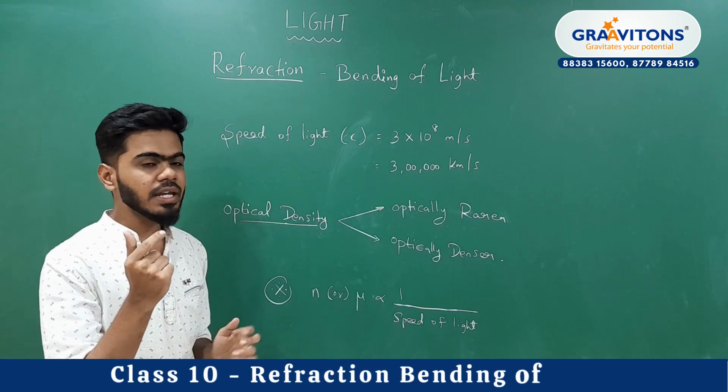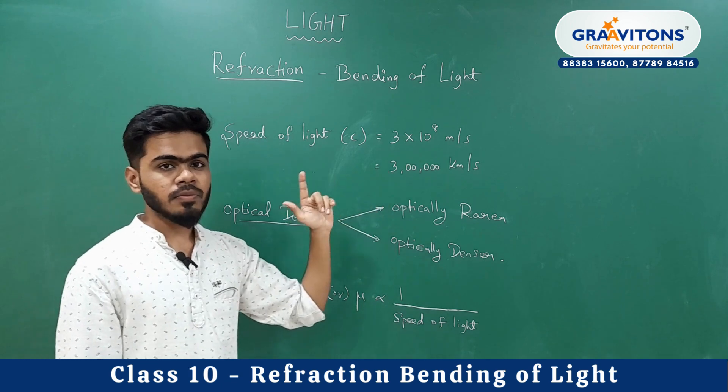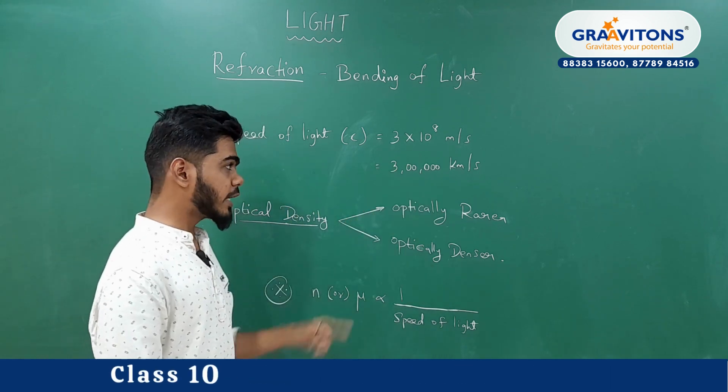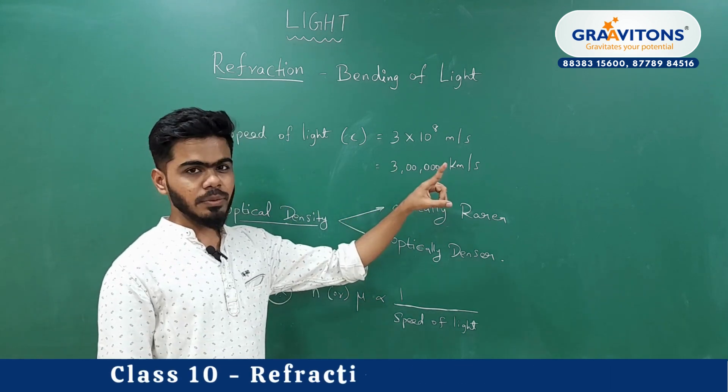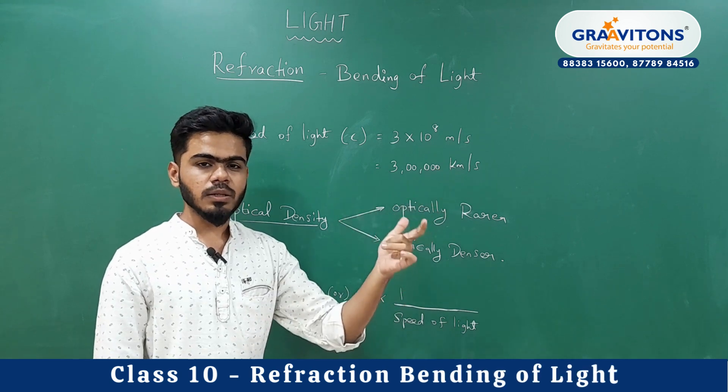Just in one second, light travels 3,000,000 km. This speed of 3,000,000 km per second is the speed of light in air medium and vacuum.